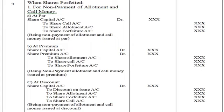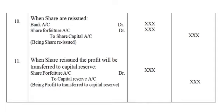When shares are forfeited for non-payment of allotment and call money: when they are issued at par — share capital account debit to share allotment account and share forfeiture account. When they are issued at premium — share capital account debit, share premium account debit to share forfeiture account. When shares are reissued — bank account debit, share forfeiture account debit to share capital account. When shares are reissued, the profit will be transferred to capital reserve — share forfeiture account debit to capital reserve account.